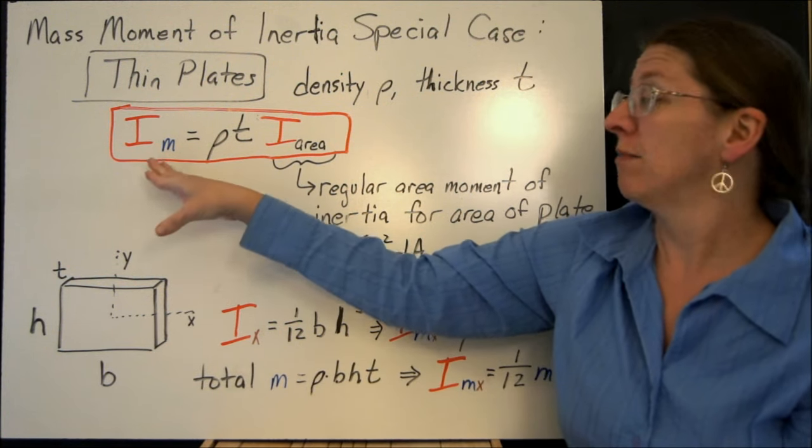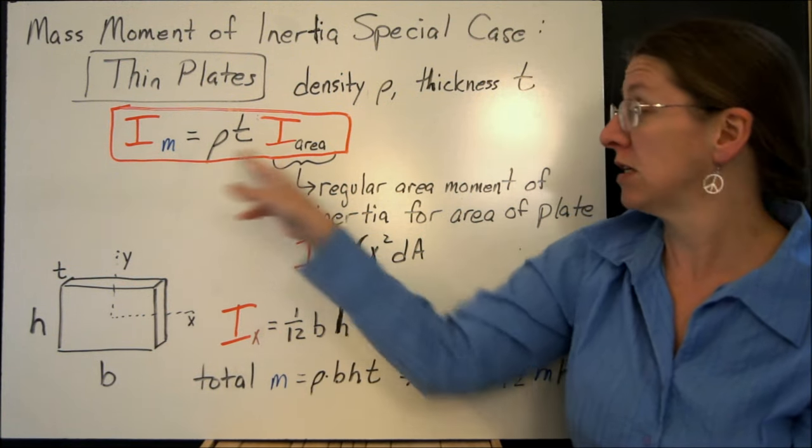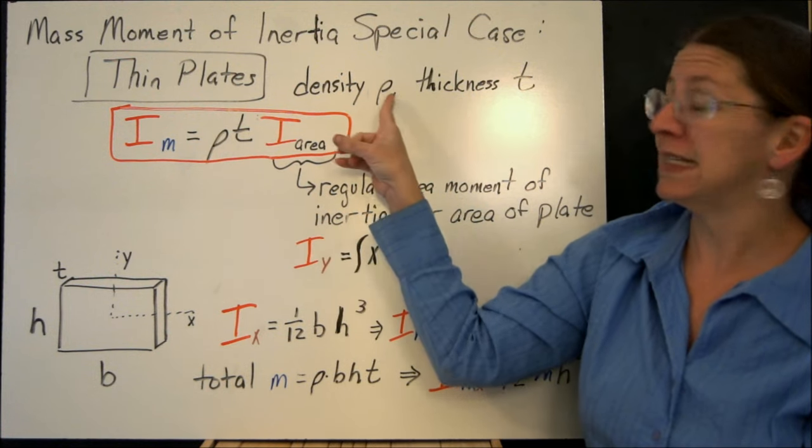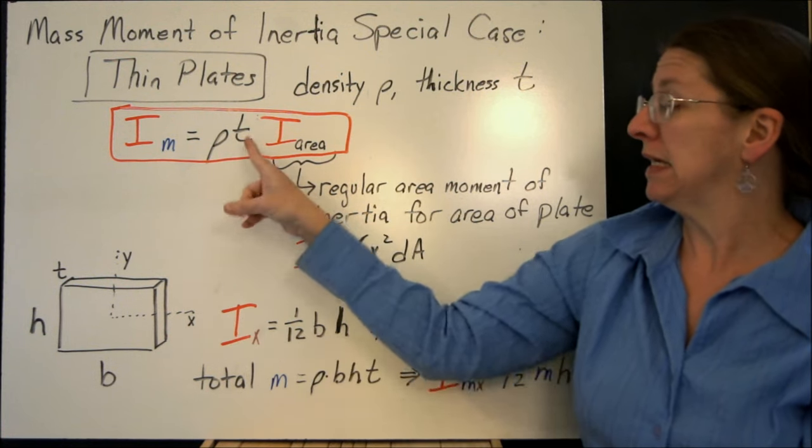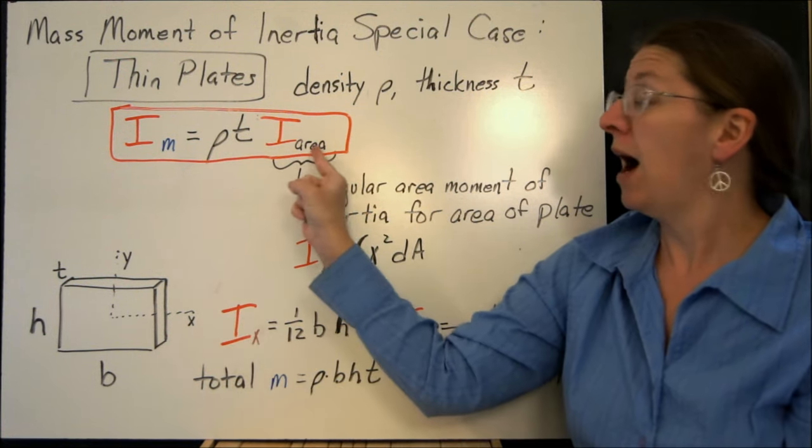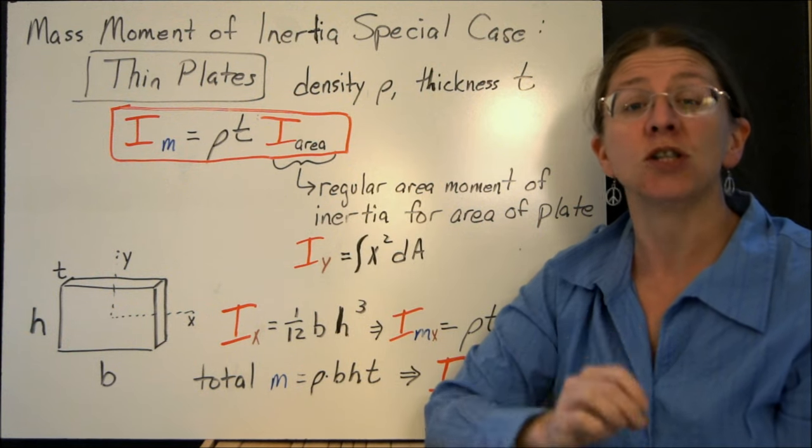we can find the mass moments of inertia using this formula, where ρ is the density of my object, t is the thickness of the plate, and I_a is the area moment of inertia, just like we've been doing.